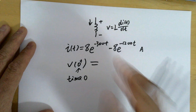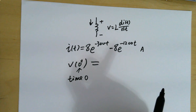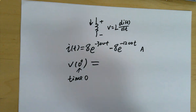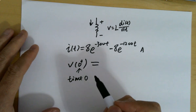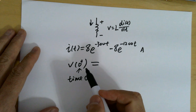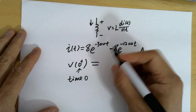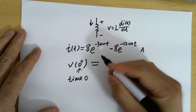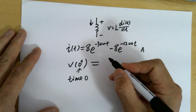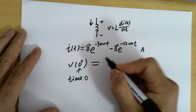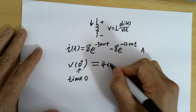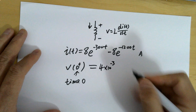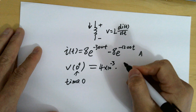V(0+) is not exactly V(0), because at V(0) nothing has happened yet. V(0+) is just at the moment it happens. So we apply the equation: V = L · di(t)/dt, and we plug zero in. V equals L, which is given as 4 millihenry, times di(t)/dt.